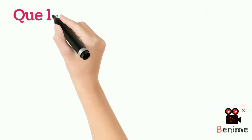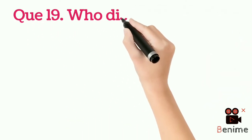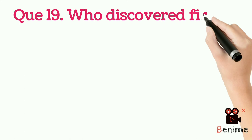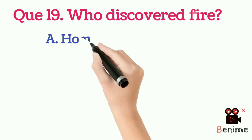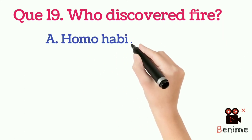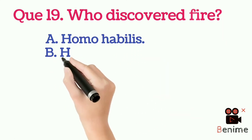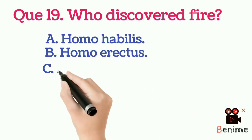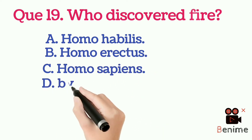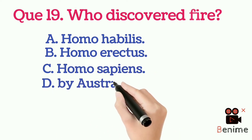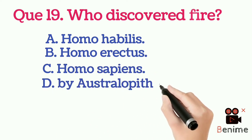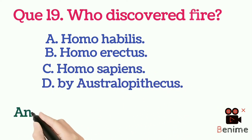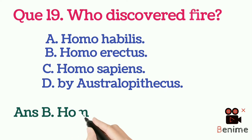Question 19: Who discovered fire? A. Homo habilis. B. Homo erectus. C. Homo sapiens. D. Australopithecus. Answer: Homo erectus.